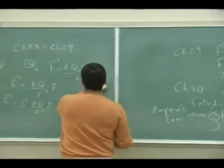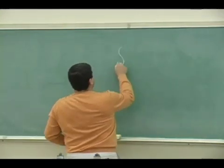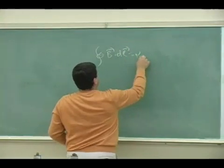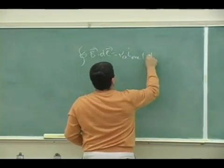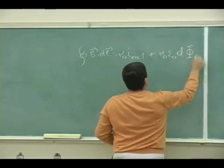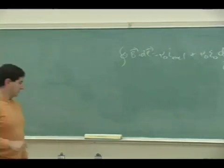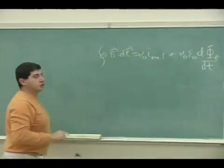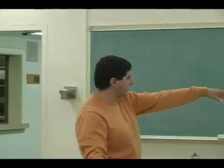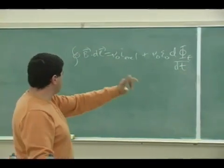Then there's a little addition to Ampere's law, which is the last thing we'll see in this chapter. It looks like this. Integral B dotted into DL is mu zero I enclosed, so that's the first part is the same, plus mu zero epsilon zero d phi E dt.